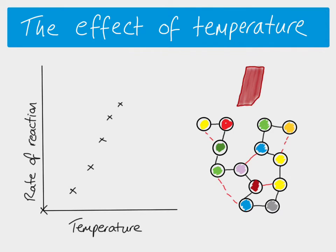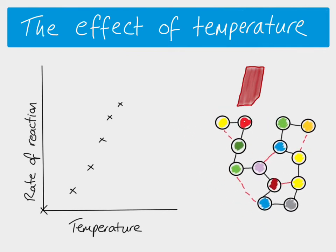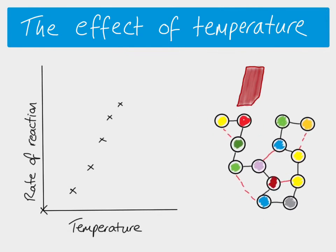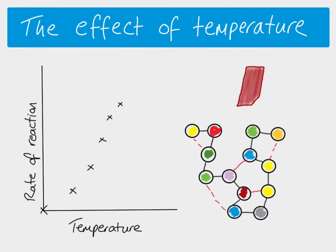That goes until you get to the maximum — this is our optimum temperature, the temperature at which you have the highest rate of reaction. The other thing to remember is that our substrate is moving, but the enzyme molecule is also moving. So as you get to the optimum, it's going to be moving very quickly, and that means that all of the atoms are moving and there's lots of vibrations.